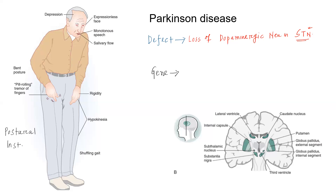This is the basic defect in Parkinson's disease. Now let us see what are all the clinical features. We have to remember four important features. The first one is tremor. In Parkinson's disease, you will get tremor at rest — resting tremor is characteristic of Parkinson's disease. Intention tremor you will find in cerebellar disorders. Tremor in Parkinson's disease is also called pill rolling tremor.